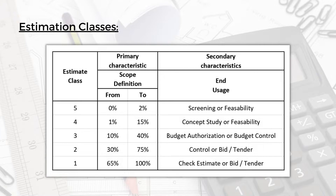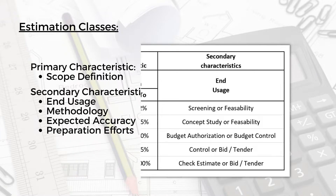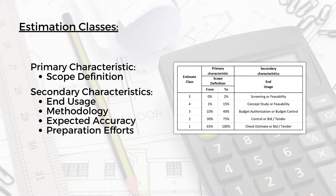Class 1 has scope definition between 65% to 100%, and the end usage will be check estimate, bid, or tender. The scope definition refers to the drawings, specifications, and all the project information needed to produce an accurate estimate. If this information is not available or not defined enough, you cannot produce a class 1 or class 2 estimate, but you can produce class 3, 4, or 5. The primary characteristic is the scope definition — how well the scope of the project is defined and what level of information is available.